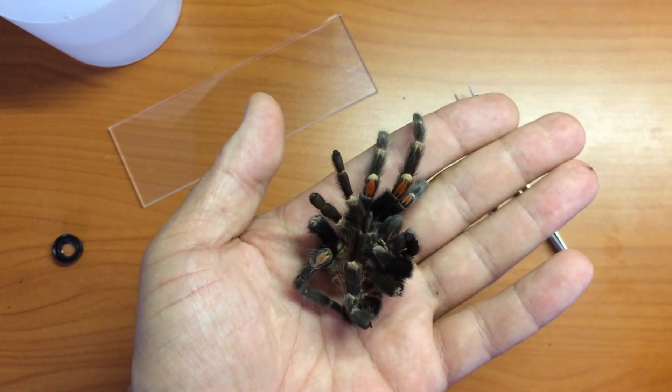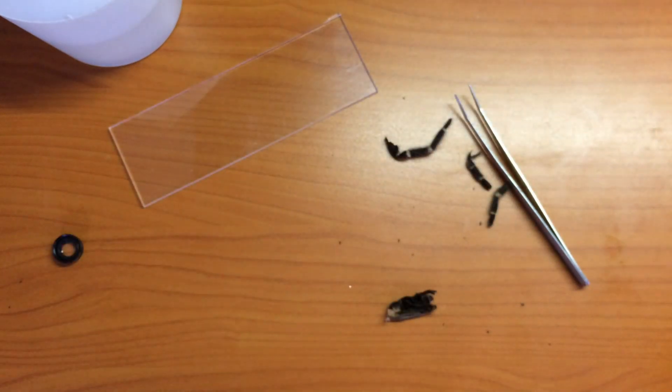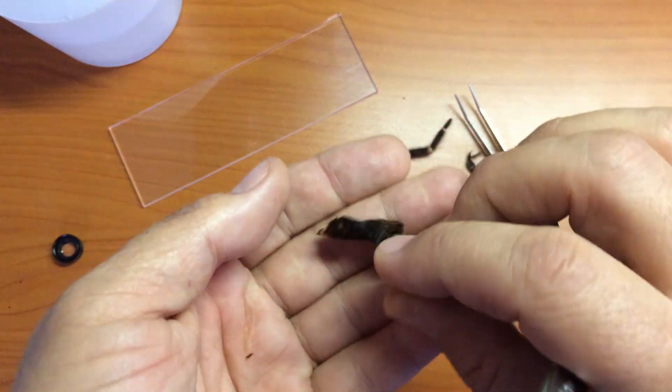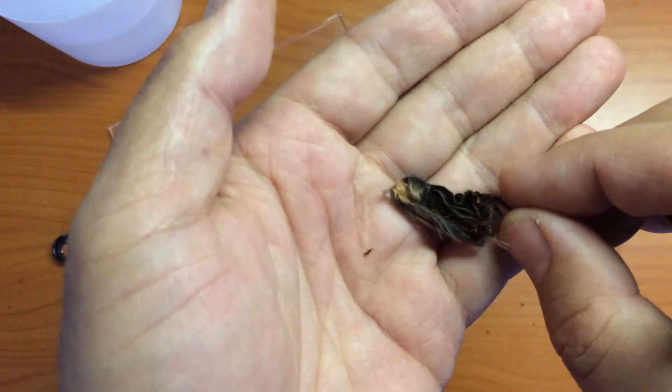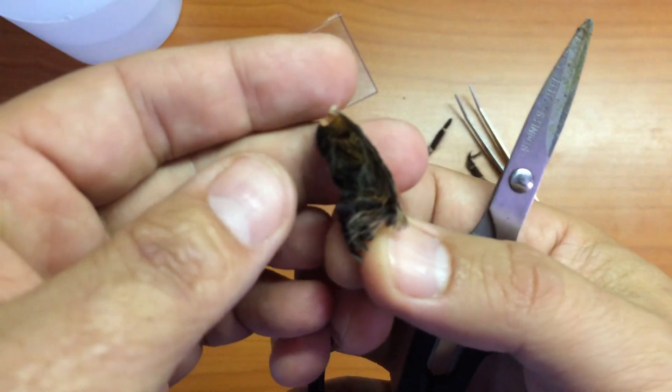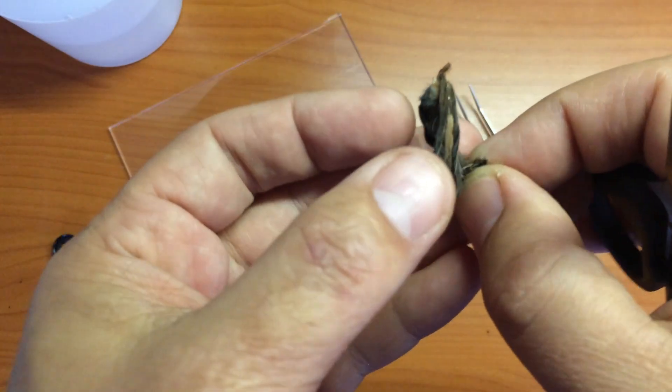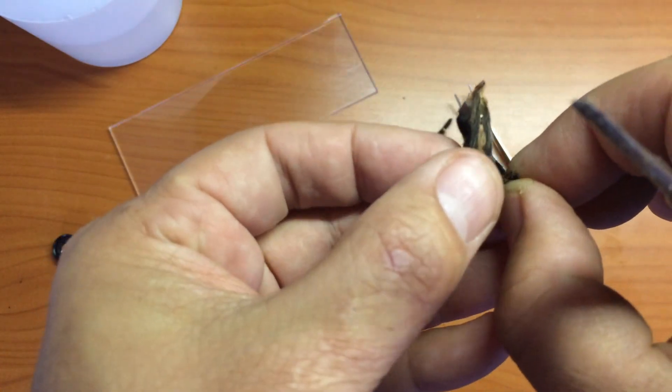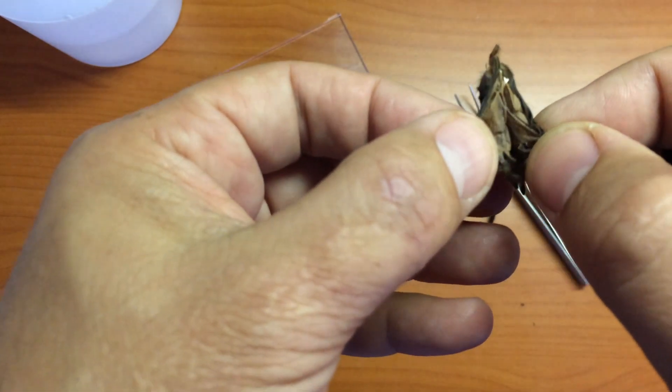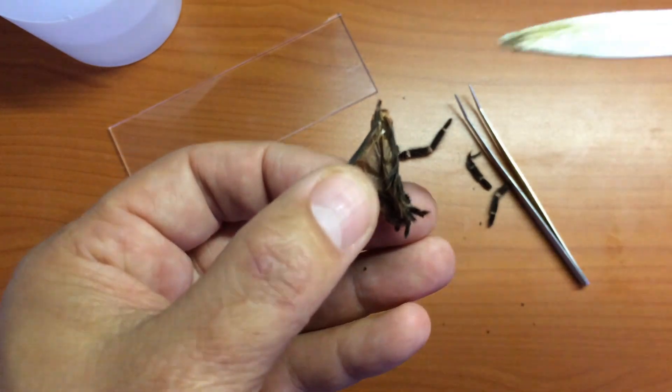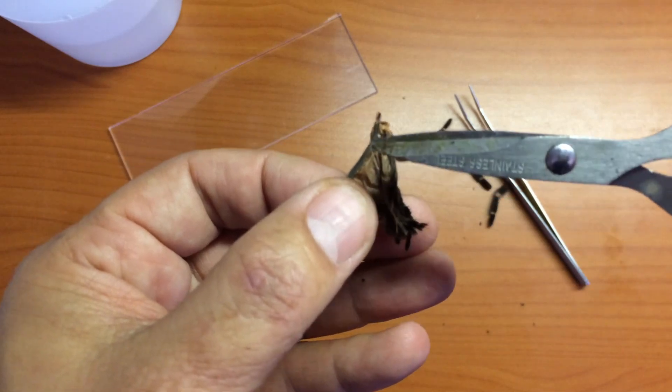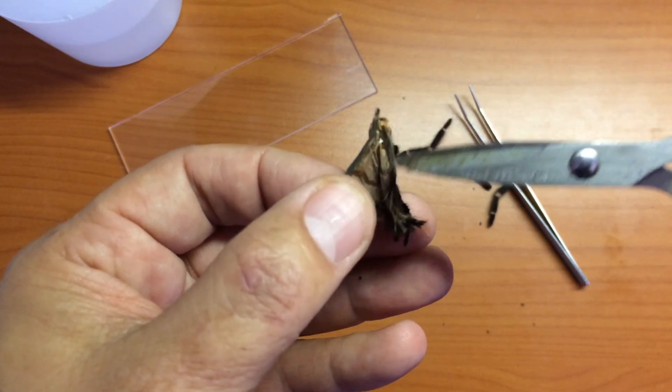Then you've got the hot potato to work with, which is the part with all the urticating bristles on. What I'll do is have a look at this and see where the book lungs are. You can see here where the bottom of the abdomen folds open. The book lungs, in other words where the carapace used to be, is here. There are the spinnerets, so that's the back of the spider. This is going to be the middle and the area where we want to look, where the book lungs are, where the spermatheca will sit if this is a female.